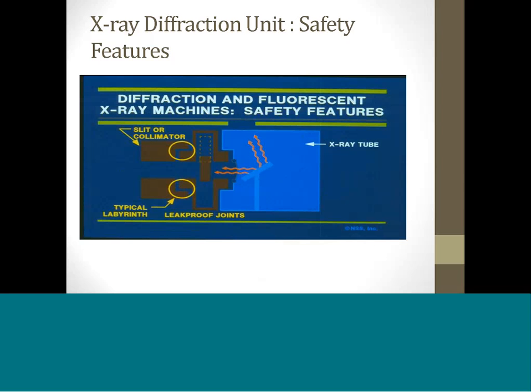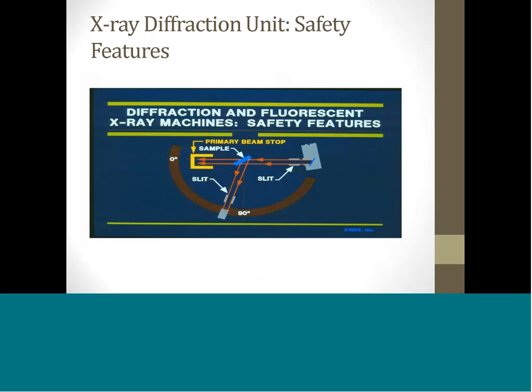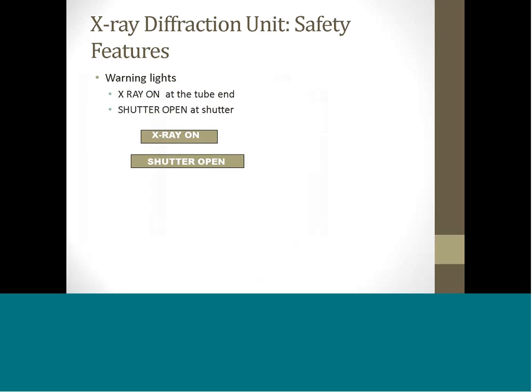Such a leak-proof joint is color highlighted in this slide. The high intensity of the primary beam, particularly in a diffraction unit, requires that some type of beam stop be positioned behind the sample to absorb the large fraction of the beam that passes through the sample. This beam stop should have side walls extending forward from the primary absorber to catch the radiation scattered backwards from the absorber. Please make sure to check for warning lights before using the equipment located at the X-ray tube. These lights will tell you whether the X-ray tube is energized, which is otherwise difficult to tell when the controls are located several feet away from it.